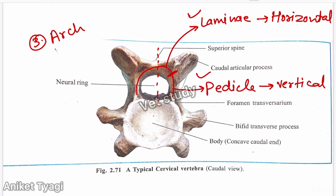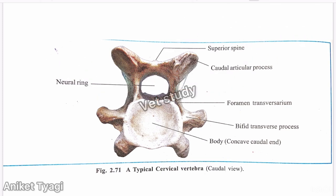There are three types of process. The first is the spinous process, the second is the transverse process, and the third is the articular process. The spinous process is a single process projected upward from the junction of the two laminae, and that is why it is called the spinous process.